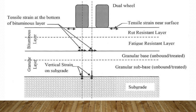Another type of rutting called mix rutting occurs due to improper mix design and compaction. So the upper layer of the subgrade is considered as another critical point. One at the center of the dual wheel and one at the center of the single wheel are also considered as critical points.